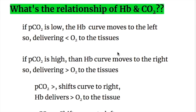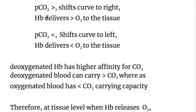What's the relationship of hemoglobin and carbon dioxide? If carbon dioxide is low, the hemoglobin curve moves to the left, delivering less oxygen to the tissues. If carbon dioxide is high, the hemoglobin curve moves to the right, delivering more oxygen to the tissues. So PCO2 higher shifts the curve to the right; when PCO2 decreases, it shifts the curve to the left and hemoglobin delivers less oxygen to the tissue.